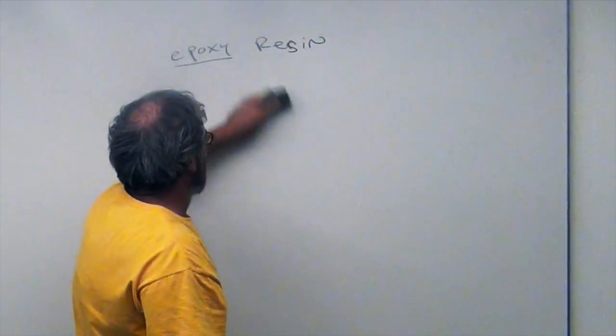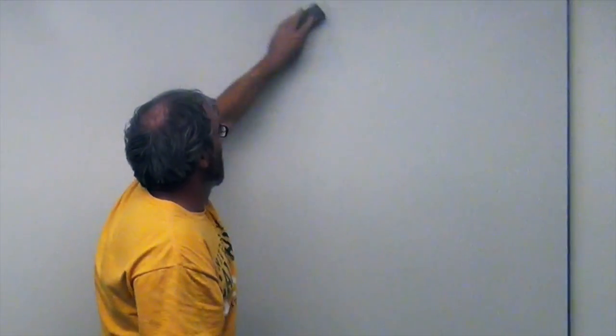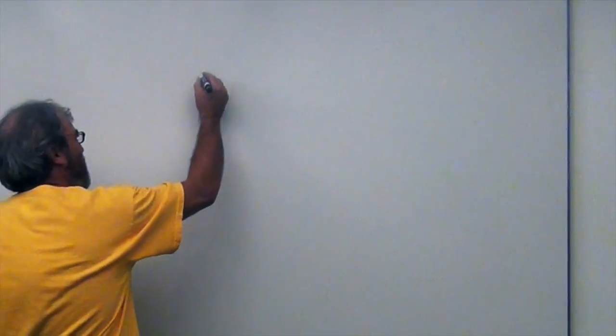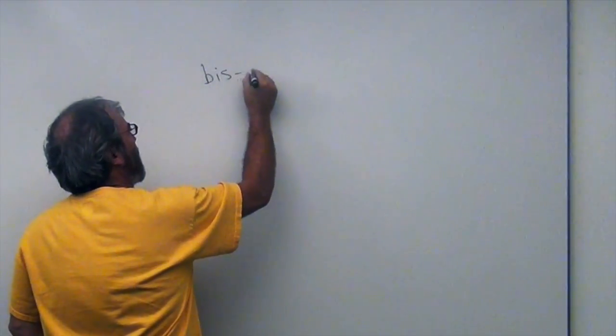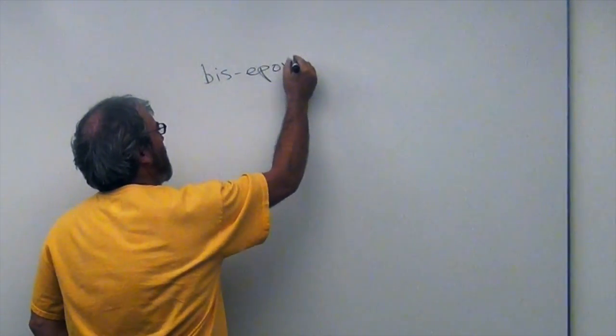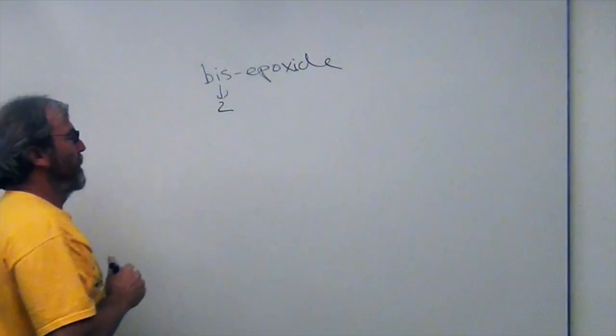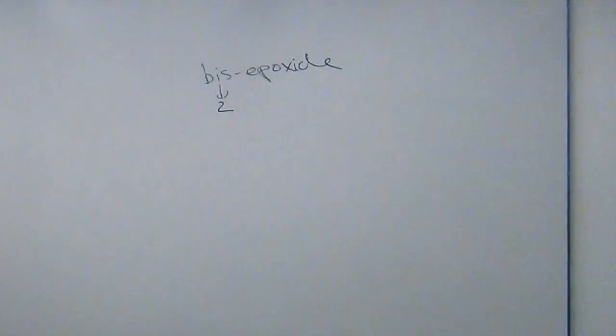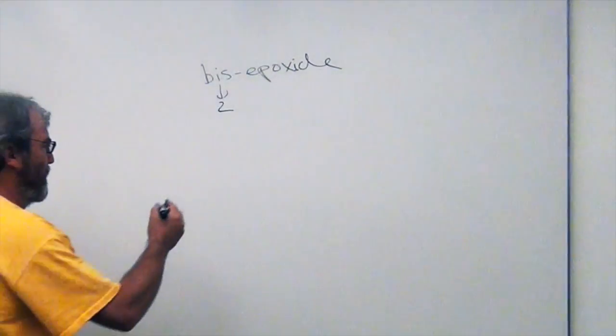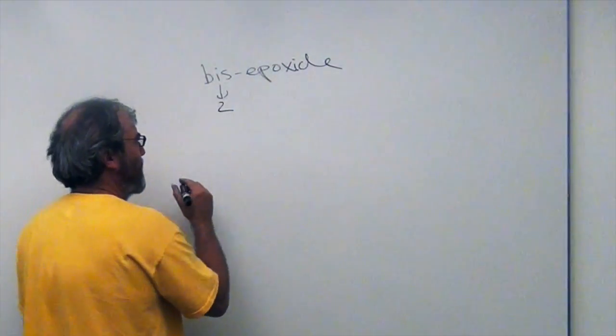Let's talk about what the epoxide is. Here's the epoxide component. It's actually a bis epoxide, which means it has two epoxides. So let me show you the chemical structure of the bis epoxide.